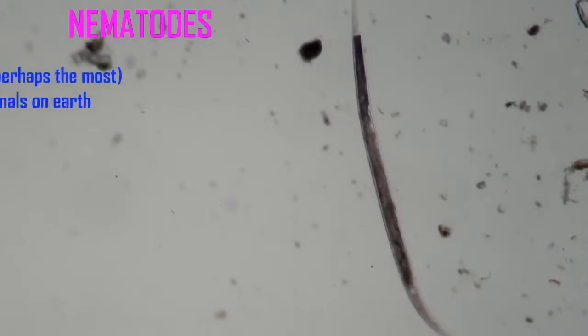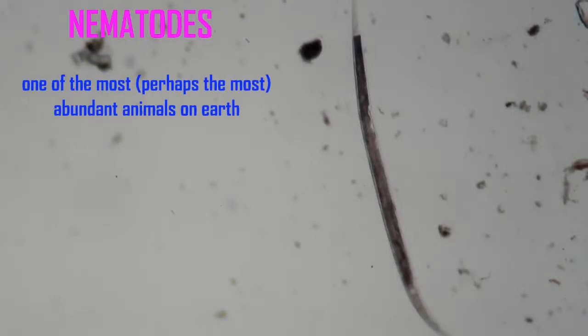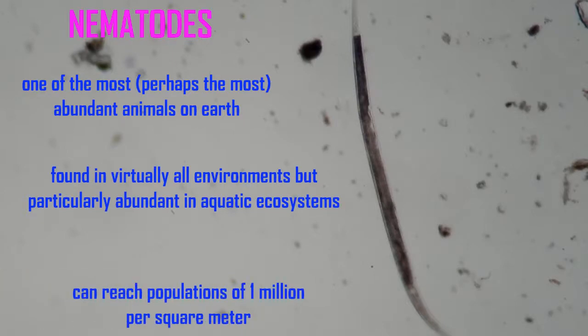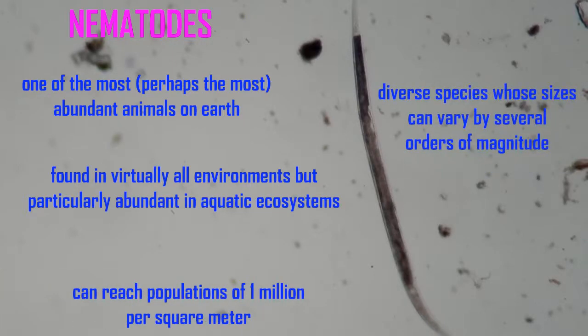Nematode worms, or roundworms, are one of the most abundant groups of animals on Earth, perhaps the most abundant. They are found in virtually all environments, but they are particularly abundant in aquatic ecosystems.